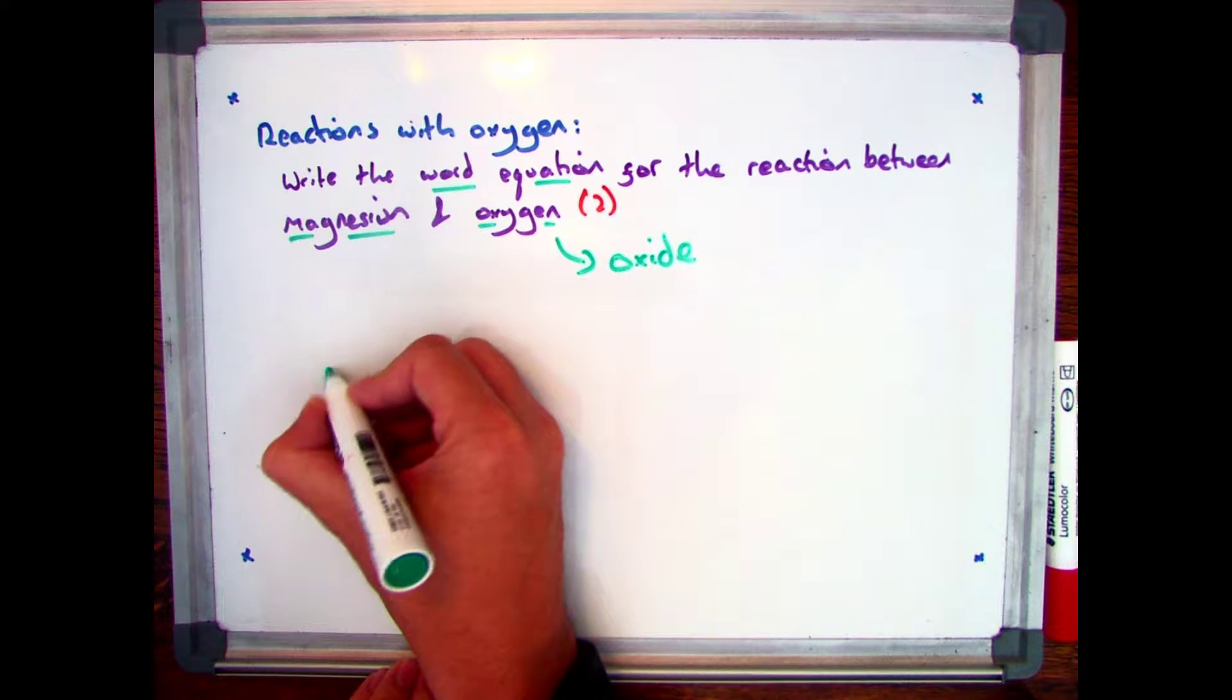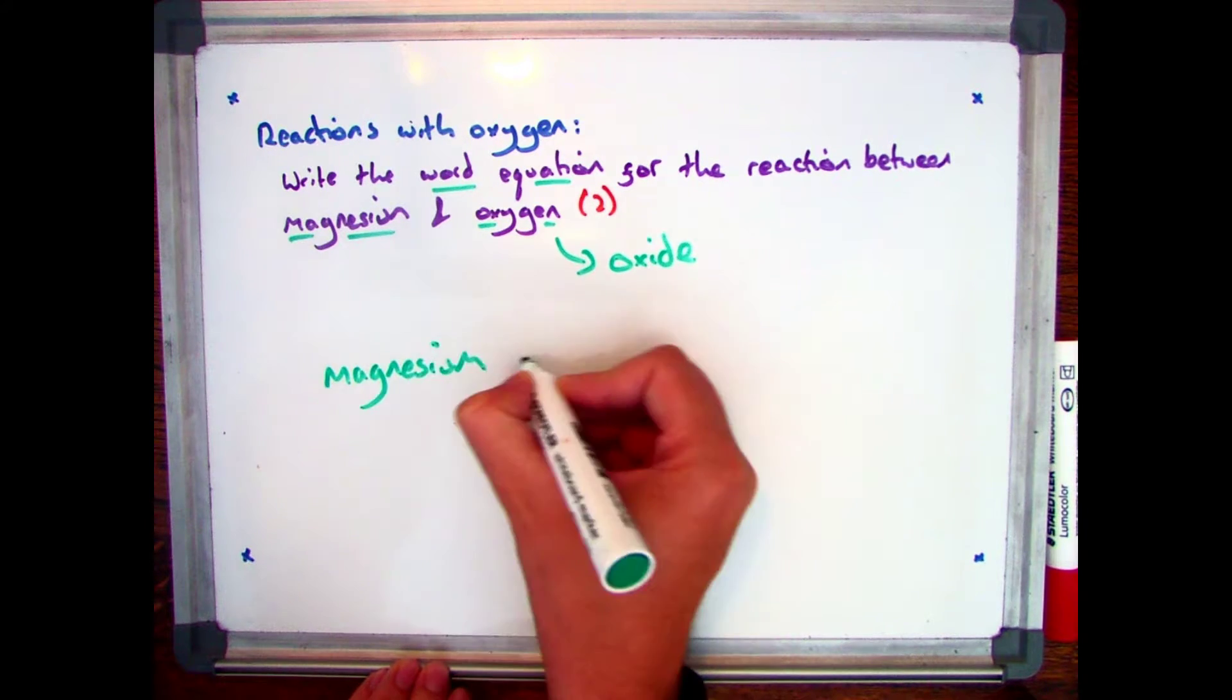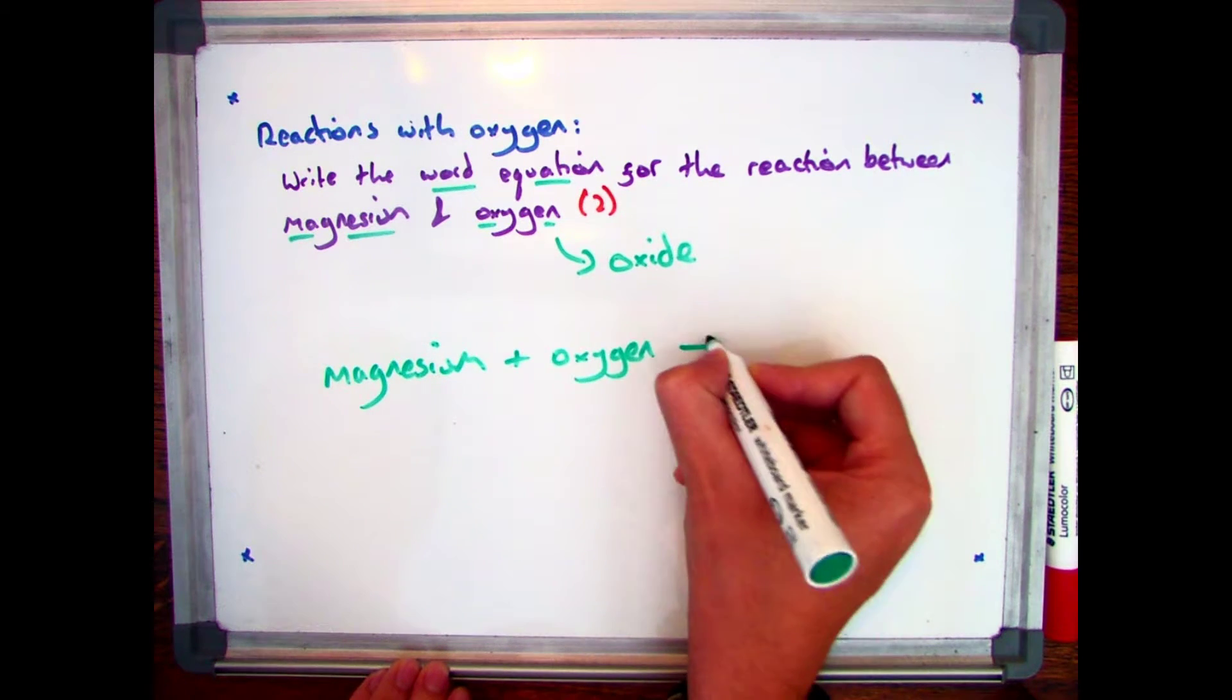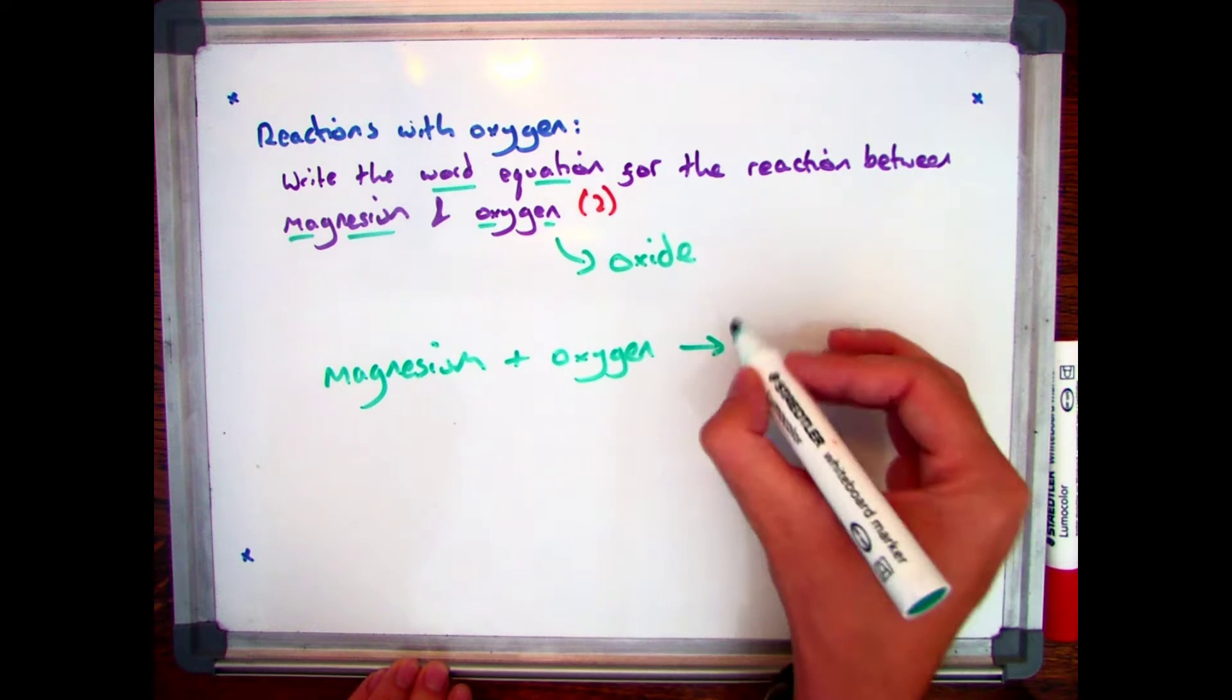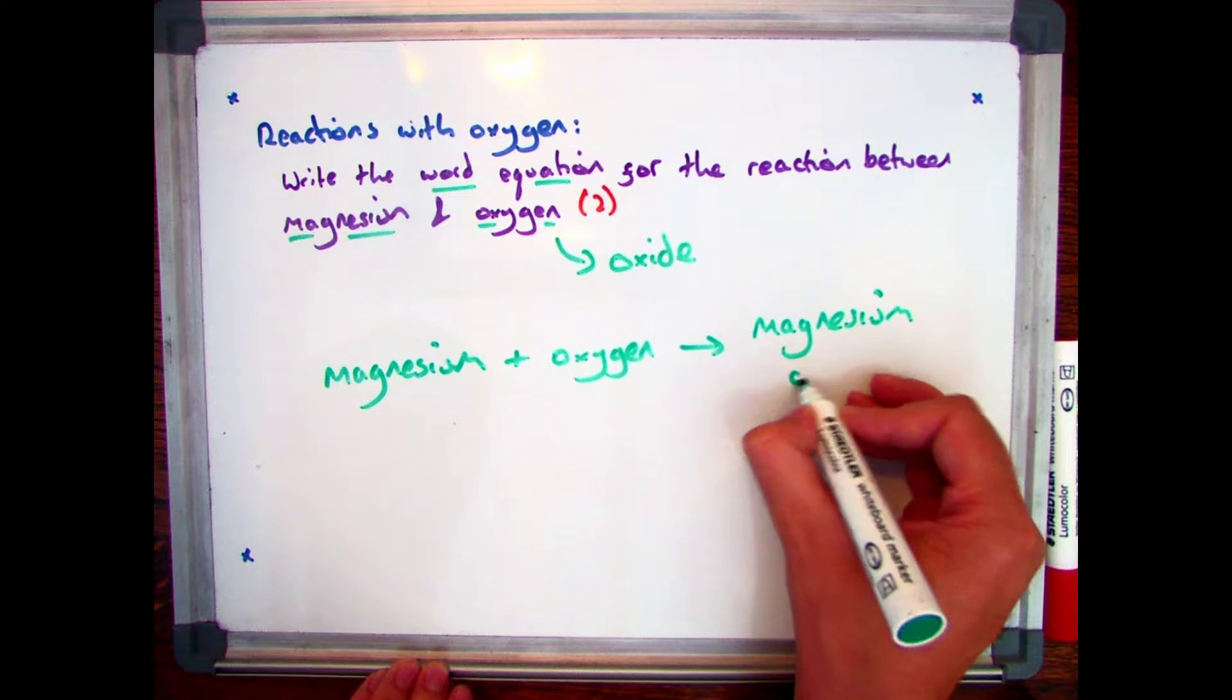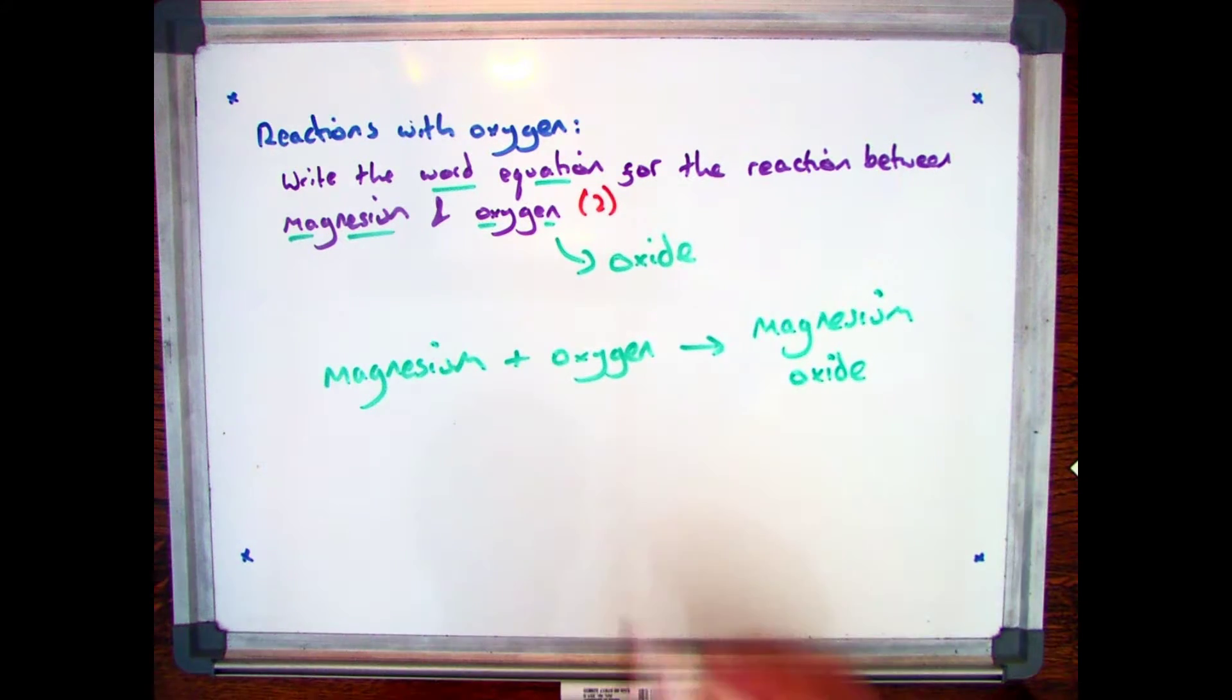So you start off with your two reactants which in this case are magnesium and oxygen, and then you put your arrow in to show that you're producing something. And it's whatever the name of the metal is with the word oxide afterwards. So magnesium plus oxygen produces magnesium oxide.